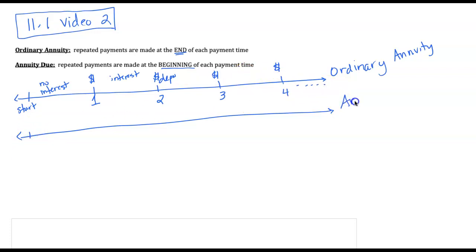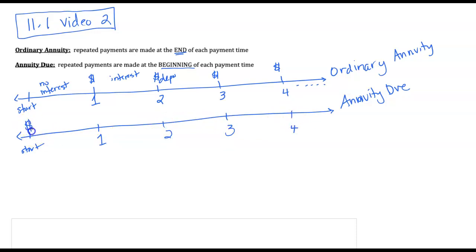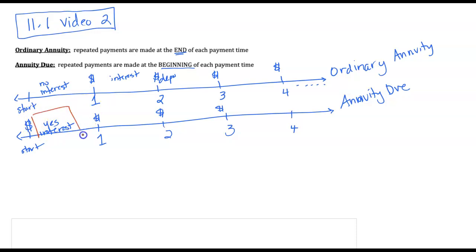With an annuity due, the deposits are made at the beginning of the time period. So if this is our start and we still have time periods one, two, three, and four, now our money is deposited at the start of each time period instead of at the end. Because with an annuity due there is money at the start of the account, in that first time period, yes, there is interest calculated. That's the big difference — with an annuity due you have this extra interest.